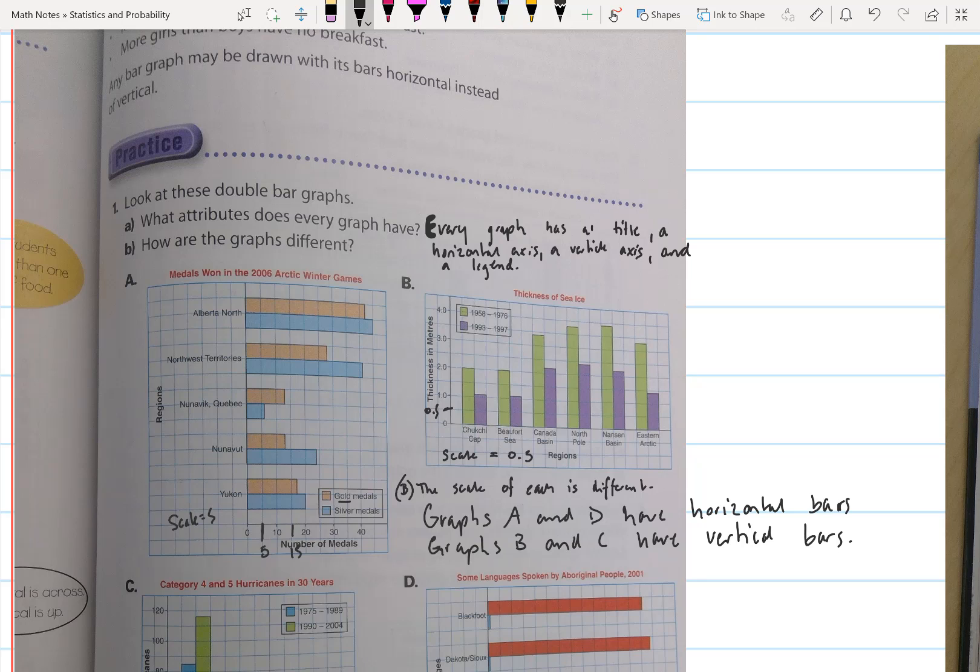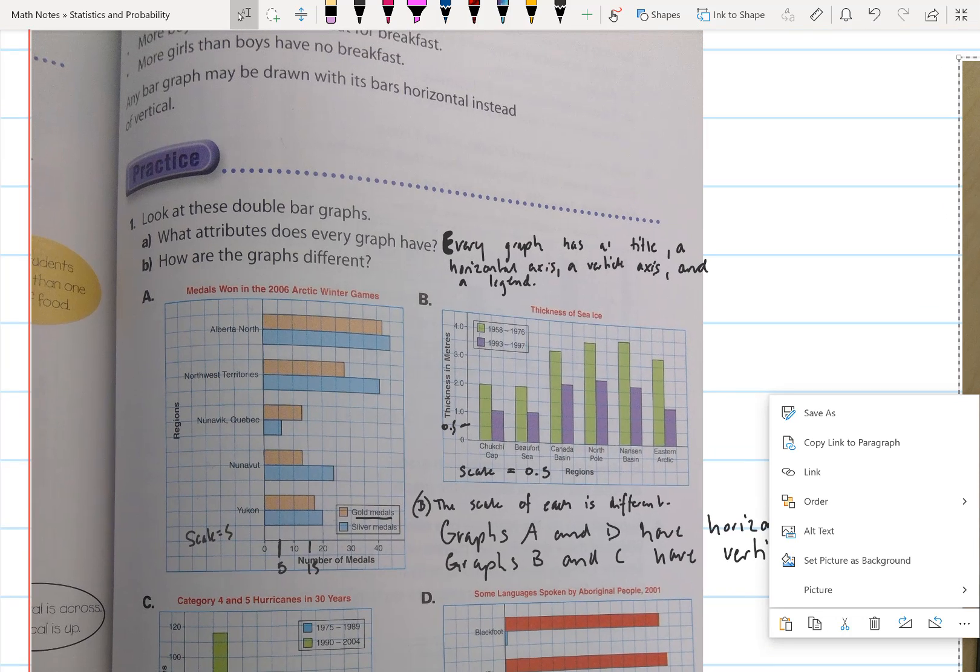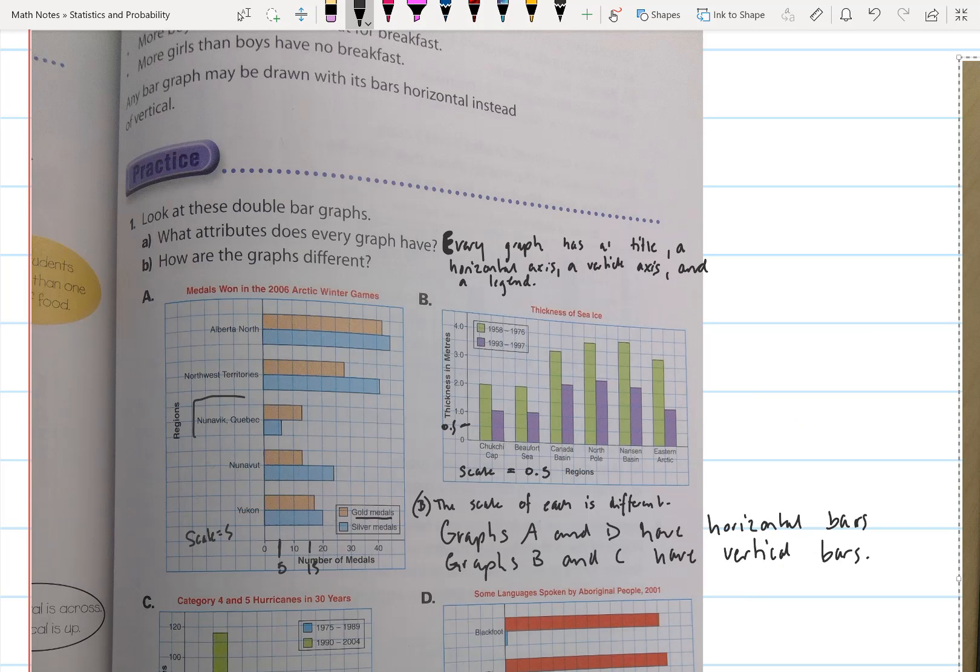So I can go back here and see which team won more gold medals than silver. Well, my gold medals are the peach color. Are there any? Yes, of course. There's this team right here. It's the only team that won more gold medals than silver medals.